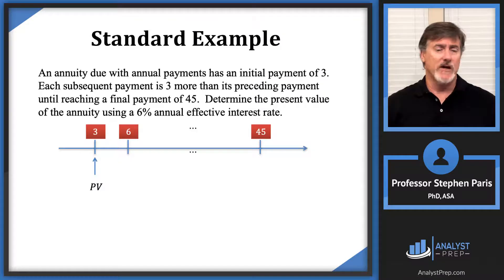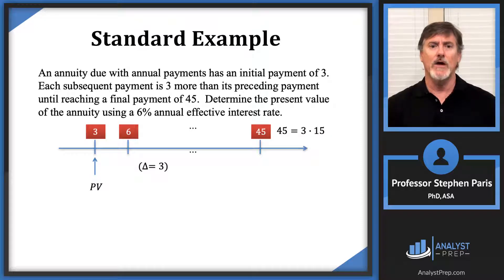The first thing I recognize is that the payments form an arithmetic progression with a common difference of 3, so I'm going to use Delta to represent that common difference: Delta equals 3. Then I look at the 45 and recognize that as 3 times 15, so the first payment is 3 times 1, the second payment 6 is 3 times 2, and the final payment of 45 is 3 times 15.